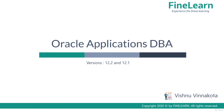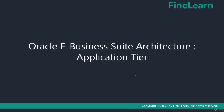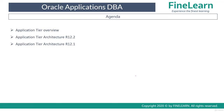In this lesson we will be seeing the architecture of the application tier. First we will see the overview of the application tier architecture, then the architecture for release 12.2, and after that the architecture for release 12.1.